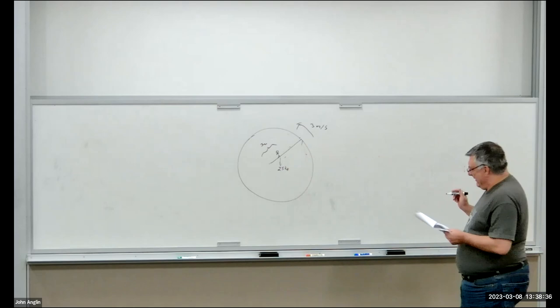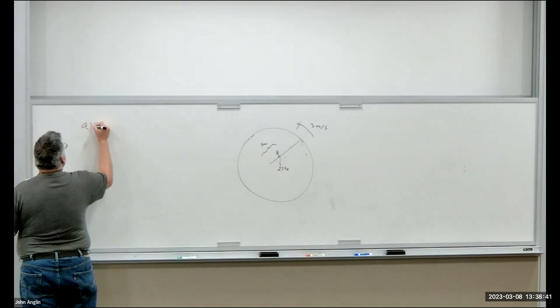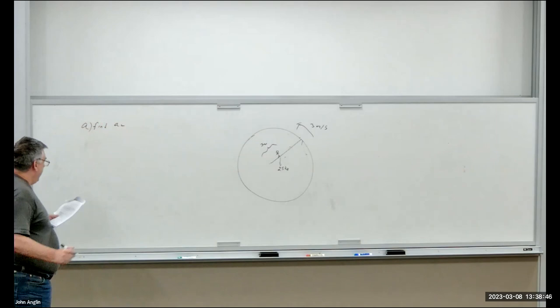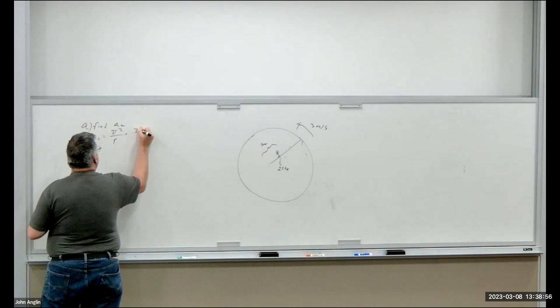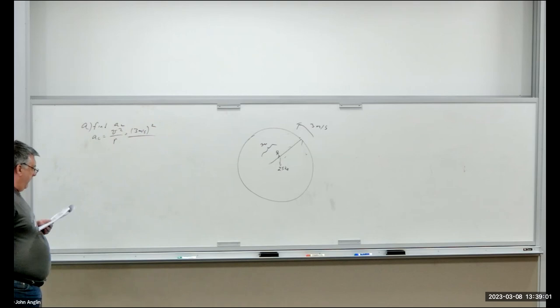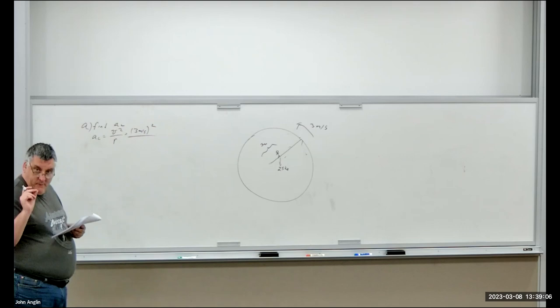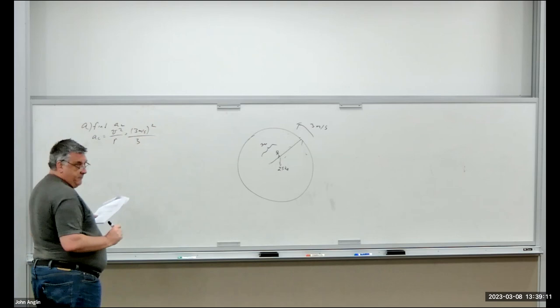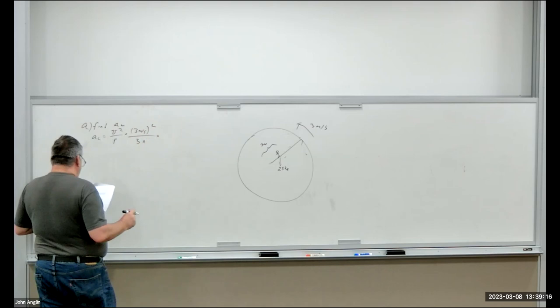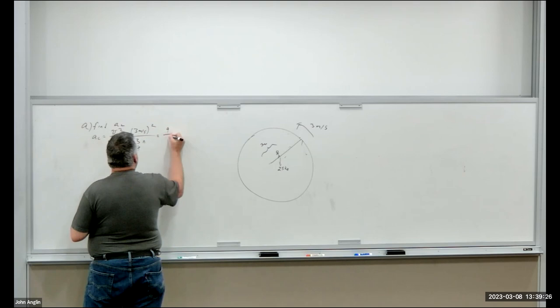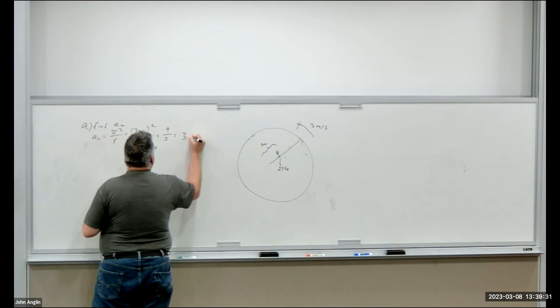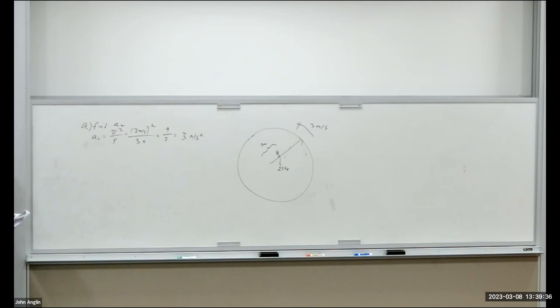What is the centripetal acceleration on this kid? Centripetal acceleration is V squared over R. Velocity is 3 meters per second, radius is 3 meters — no unit conversion required. Three squared is nine, divided by three gives us 3 meters per second squared as the centripetal acceleration.